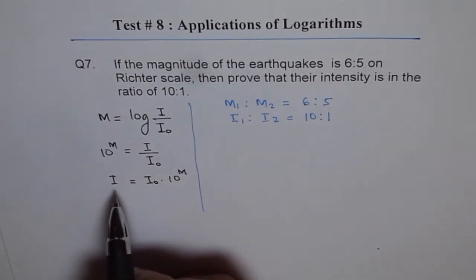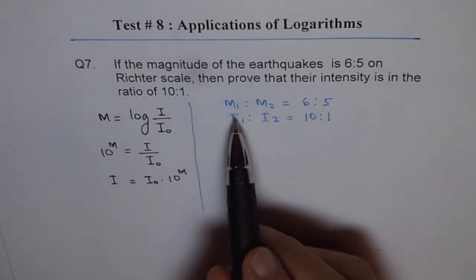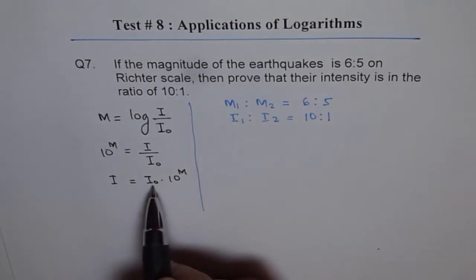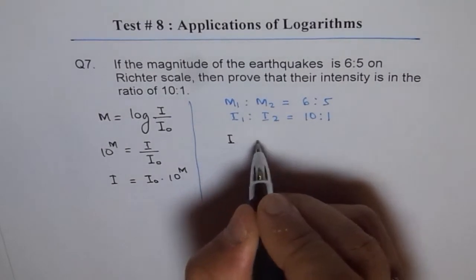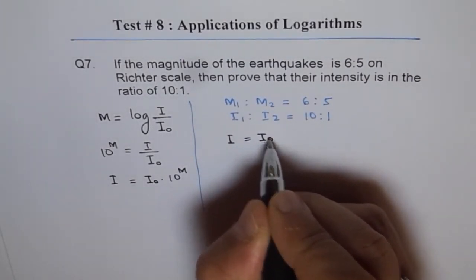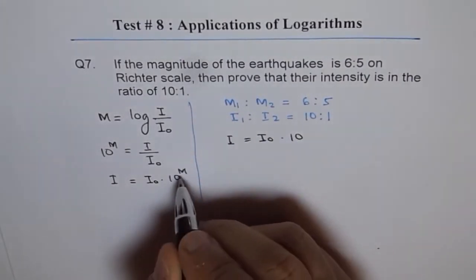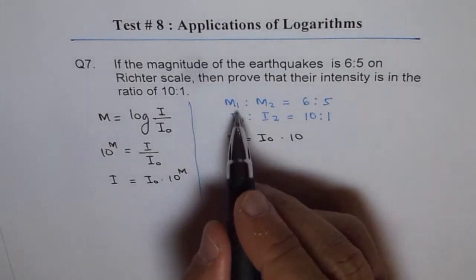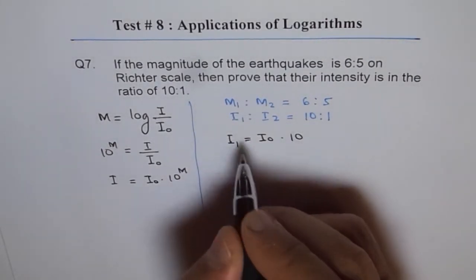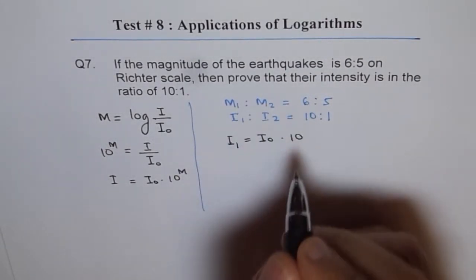What we can do is we can write intensities in terms of magnitudes using this formula. I equals I₀ into 10 to the power of M. So I₁ equals I₀ into 10 to the power of M₁. We can put the value 6.